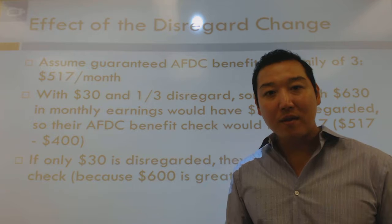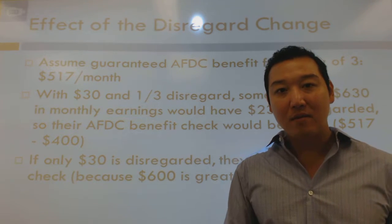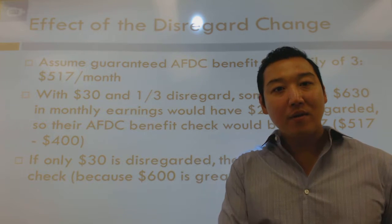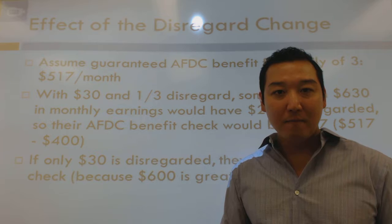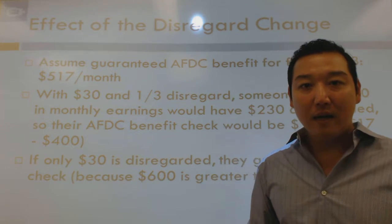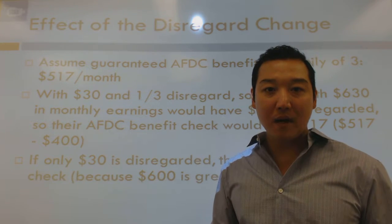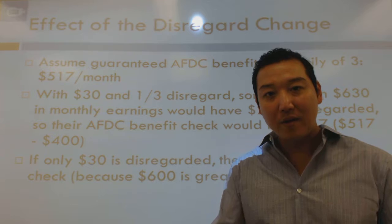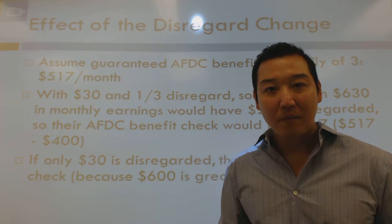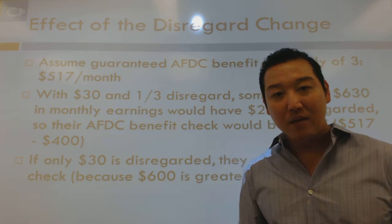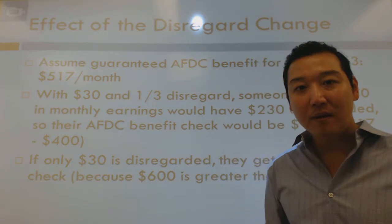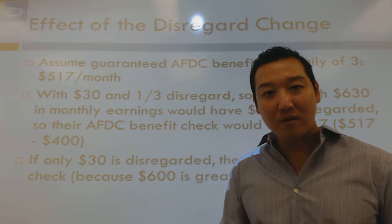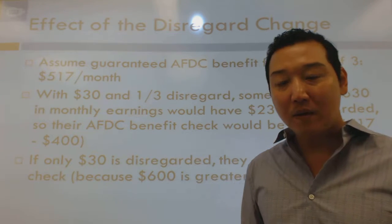Assume a family of three earning $630. Prior to the 1980 amendments, they'd have $30 disregarded, leaving $600 of countable earnings, and then one-third of all remaining earnings disregarded, resulting in only $400 of countable earnings — so they'd receive a net AFDC benefit of $117. But with the disregard changed to only $30, this family now has $600 of countable earnings, which exceeds the maximum allowable benefit. That family no longer receives a benefit. The aggregate effect of this disregard change was to kick people off the welfare rolls.